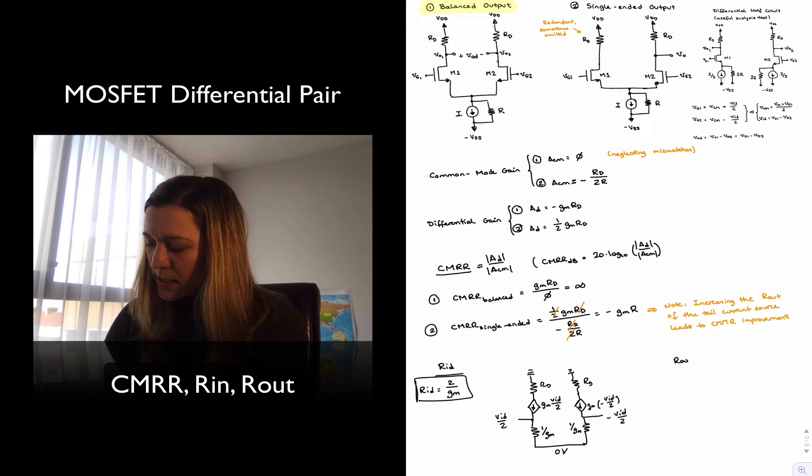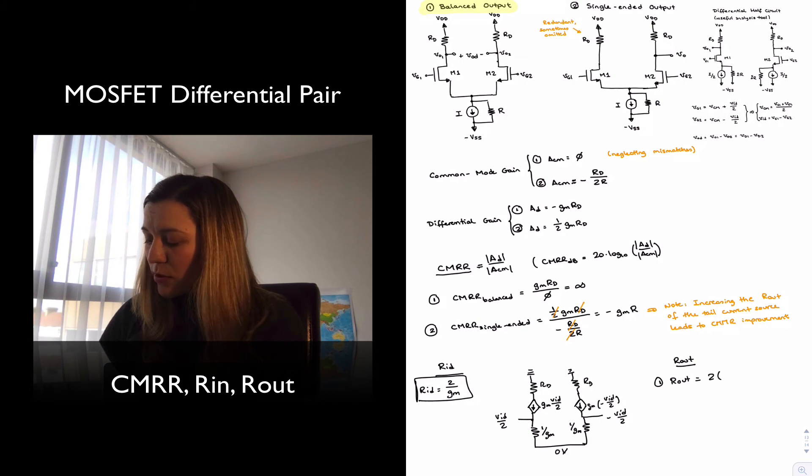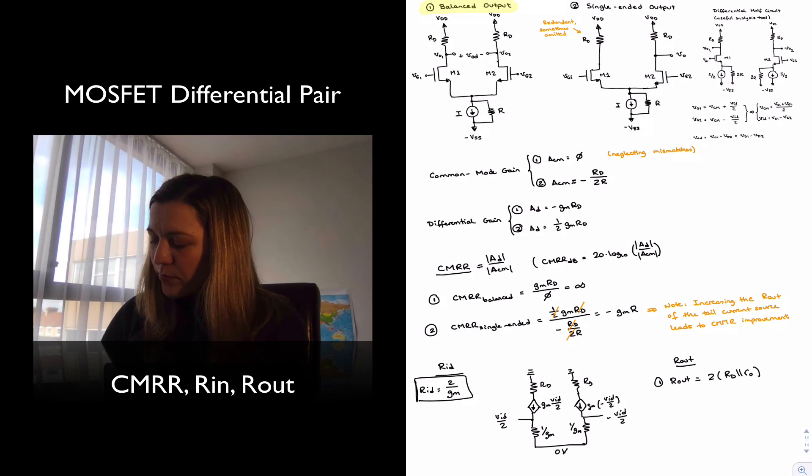And for the output resistance, even though we have not drawn the output resistors, we have pretty much ignored little rout in our calculations. The output resistance in the case of the balanced will be basically RD in parallel with little rout, and that in series with RD in parallel with little rout. So two times RD in parallel with little rout. And in the single ended case it will just be RD in parallel with little rout.